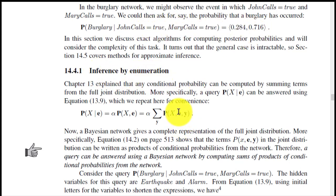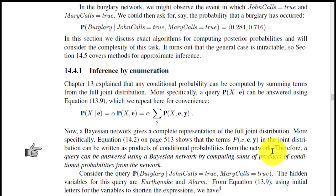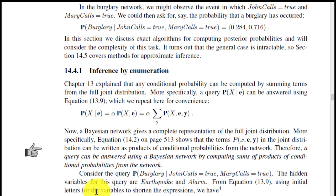The next approach is inference by enumeration. A query P(X | e) can be answered using the following equation. A Bayesian network gives a complete representation of the full joint distribution. Specifically, equation 14.2 shows that the terms P(x, e, y) in the joint distribution can be written as a product of conditional probabilities from the network. Therefore a query can be answered by computing sums of products of conditional probabilities from the network. Consider the query P(Burglary | JohnCalls=true, MaryCalls=true); the hidden variables for this query are Earthquake and Alarm, and using equation 13.9 with initial letters for variables we obtain the expression.